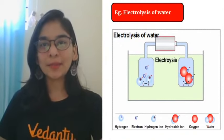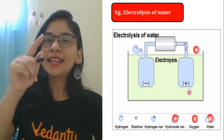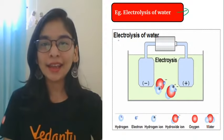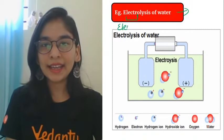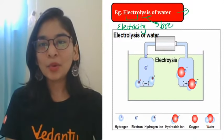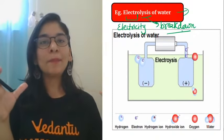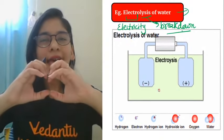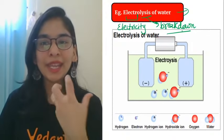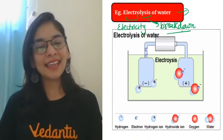Now, the second type: electrolytic decomposition. Electro means electricity, and lysis means breakdown. Electrolysis means when I pass electricity through certain substances, they can break down. One example: water (H₂O) breaks down to give hydrogen gas and oxygen gas when electricity is passed through it.